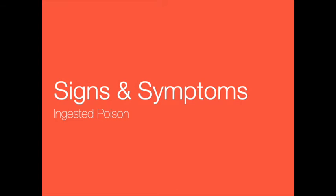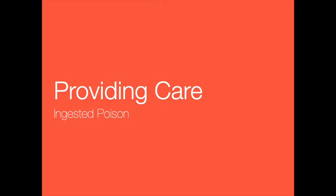Symptoms of food poisoning, which can begin between 1 and 48 hours after eating contaminated food, include nausea, vomiting, abdominal pain, diarrhea, fever, and dehydration. Severe cases can result in shock or death, particularly in children, the elderly, and those with an impaired immune system. If the patient is fully conscious and alert, immediately call the PCC and follow directions given. Do not give the patient anything to eat or drink unless told to do so. If you don't know what the poison was and the patient vomits, save some of the vomit for analysis.